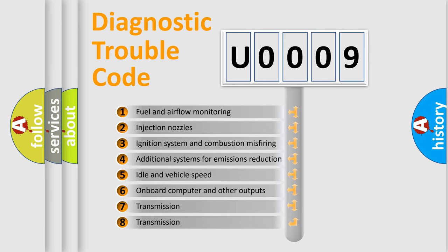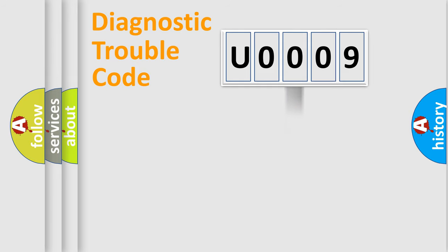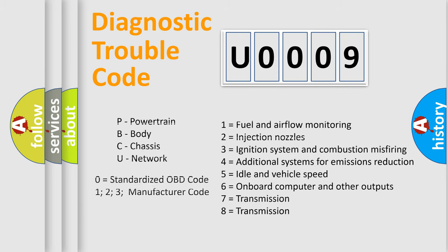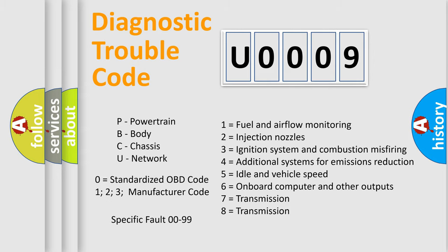The third character specifies a subset of errors. The distribution shown is valid only for the standardized DTC code. Only the last two characters define the specific fault of the group. Let's not forget that such a division is valid only if the second character code is expressed by the number zero.